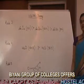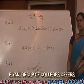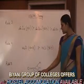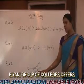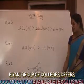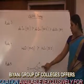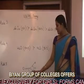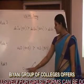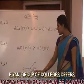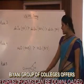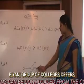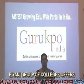Rule fifth: it states that bond angles involving multiple bonds are greater than bond angles involving only sigma bonds. For example, in COCl₂, the bond angle between oxygen, carbon, and chlorine is greater than the bond angle between chlorine, carbon, and chlorine.